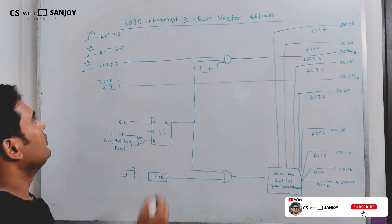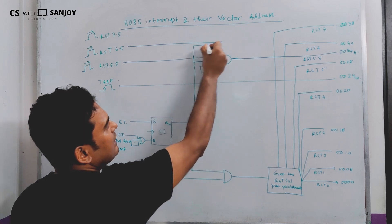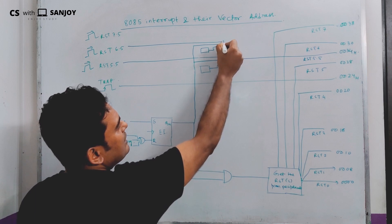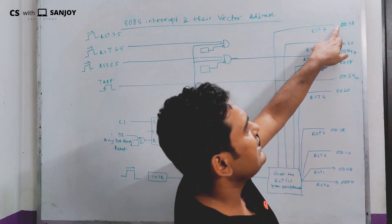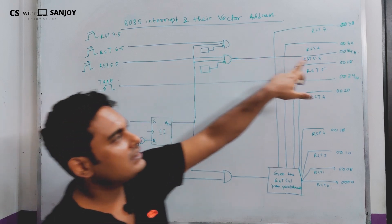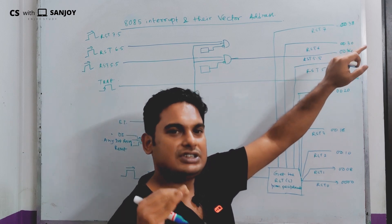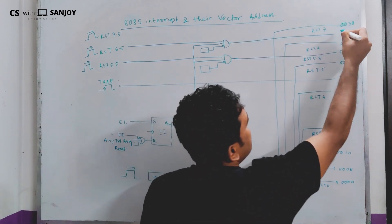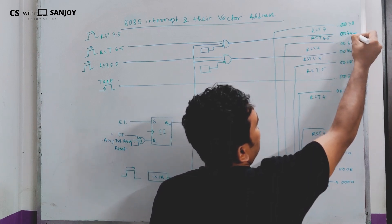A similar case happens with RST 6.5. RST 6.5 also requires interrupt enable and a mask bit check. The call location of RST 6.5 is 0034H.